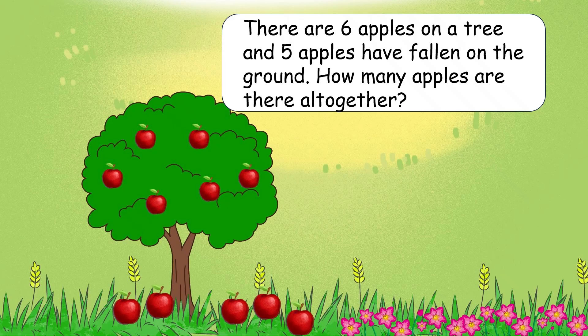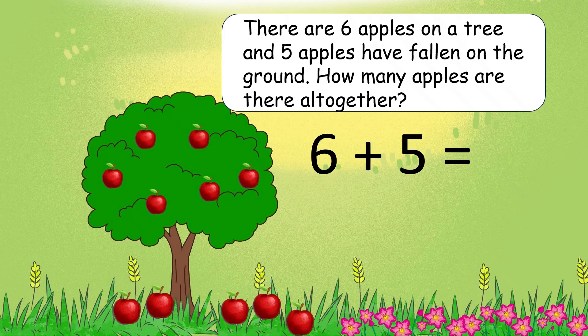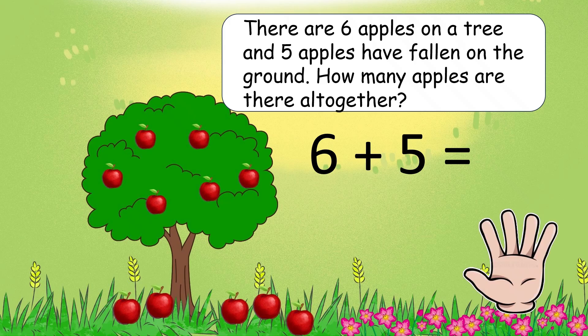We have to add 6 plus 5. Which one is the smaller number here? 5. So open 5 fingers and let's count forward from 6: 7, 8, 9, 10, 11. So, the answer is 11.